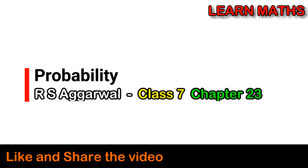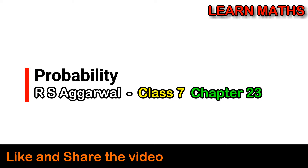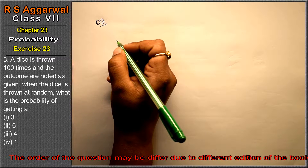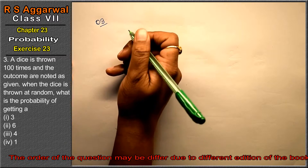Let's do question number 3 of exercise 20, that is probability. Question number 3 is: a dice is thrown 100 times and the outcomes are noted.